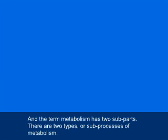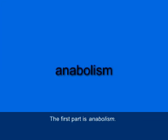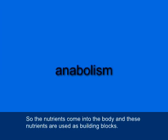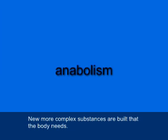Metabolism has two sub-parts, two types or sub-processes. The first is anabolism, A-N-A-B-O-L-I-S-M. Anabolism refers to the building up of body cells and substances from nutrients. The nutrients come into the body and are used as building blocks to create new, more complex substances that the body needs.